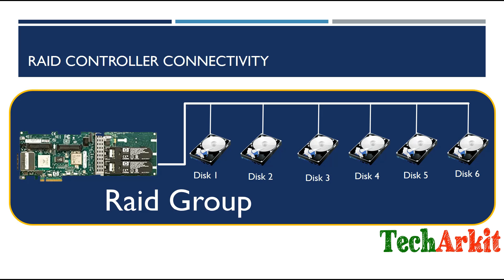In the case of RAID, you have a RAID controller with multiple disks attached as a group. In this example, six disks are grouped as a single drive — from the server side or disk management side they all appear as a single drive. You attach the drives to the RAID controller, and the controller defines the RAID level based on your application type or requirement.